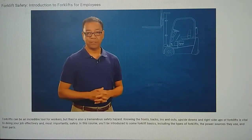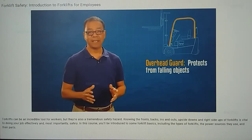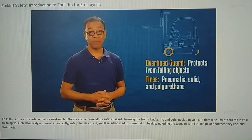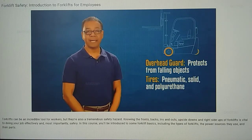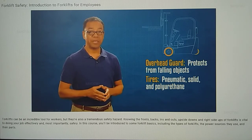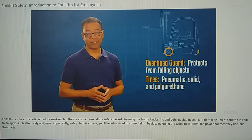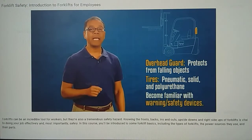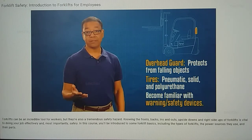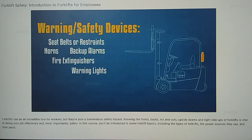On any type of forklift, you'll also likely have an overhead guard, which protects the operator from falling objects. Tires are a relatively self-explanatory part of the forklift. Common types include pneumatic, solid, and polyurethane. The tires on your forklift determine the applications in which it can be used, such as indoor or outdoor, wet or dry, and smooth or rough terrain. Lastly, become familiar with any other warning and safety devices on your forklift, such as seat belts and similar restraints, horns, back-up alarms for when the forklift reverses, fire extinguishers, warning lights, directional signals, brake lights, and mirrors.